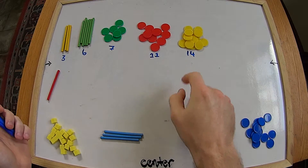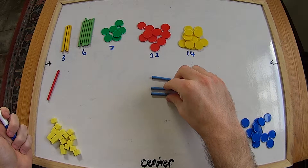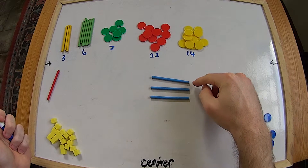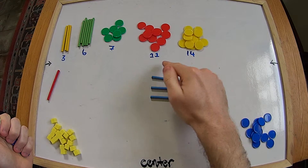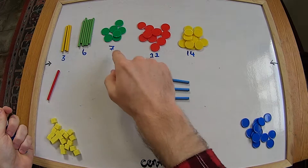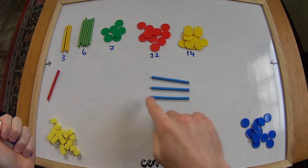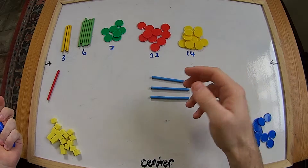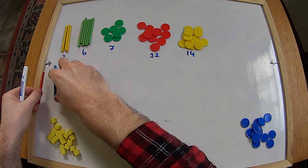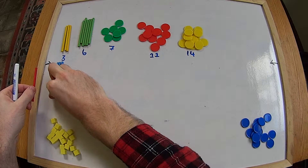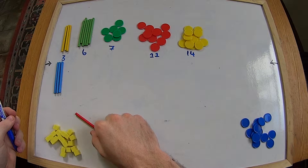Now let's look at our blue sticks. One, two, three blue sticks. We know three is smaller than fourteen, smaller than eleven, smaller than seven, smaller than six. Three yellow sticks, three blue sticks - that's exactly the same! So we can put our blue sticks right here with our yellow sticks because we have the same number.